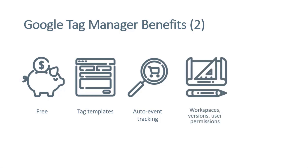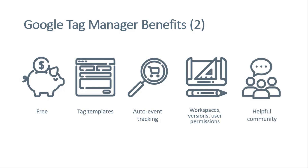Multiple members of a team can work in a Google Tag Manager container at the same time. There are workspaces and versions, so if you publish your changes and something goes wrong, you can revert to the previous version. You can also limit permissions for employees, colleagues, or partners — for example, allowing them to edit but not publish. Finally, there is a helpful community: a group on Facebook, an official GTM forum created by Google, and chats on Slack, among other places where you can get help or help others.